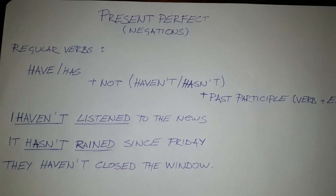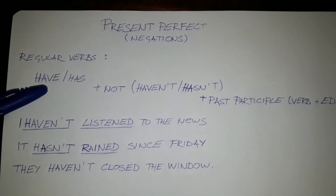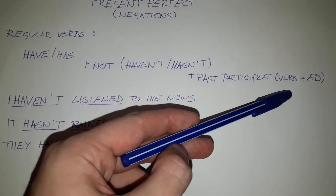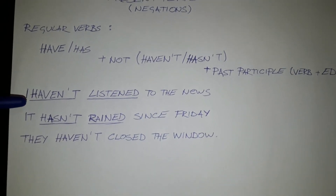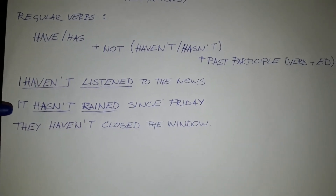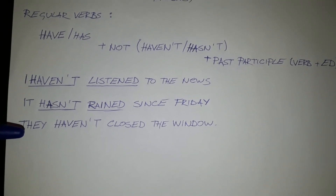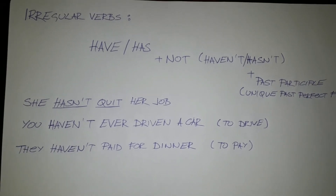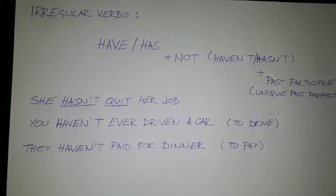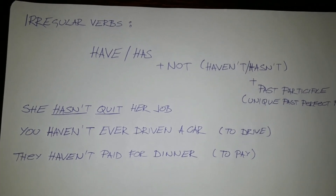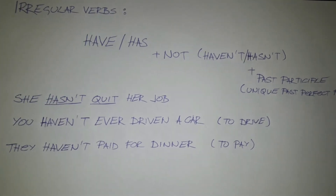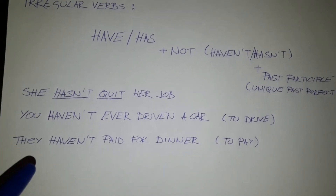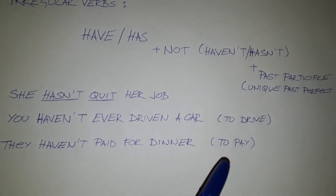Let's have a look at the present perfect in negations for regular verbs. Have/has plus not, or haven't/hasn't, plus past participle, verb plus -ed. For example: I haven't listened to the news. It hasn't rained since Friday. They haven't closed the window. For irregular verbs we also use the verb to have, contracting it into haven't and hasn't, plus the past participle. For example: She hasn't quit her job. You haven't even driven a car — the infinitive form is to drive. They haven't paid for dinner — the infinitive form is to pay.